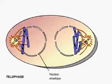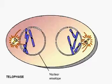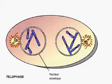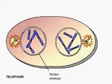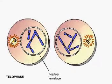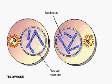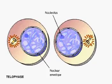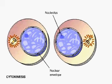During telophase, nuclear envelopes form around the identical sets of chromosomes at the two poles of the cell. The chromosomes uncoil, and nucleoli appear in the two new nuclei. Meanwhile, cytokinesis begins, splitting the cytoplasm and separating the two daughter cells.